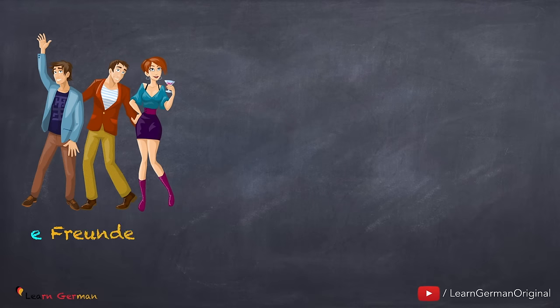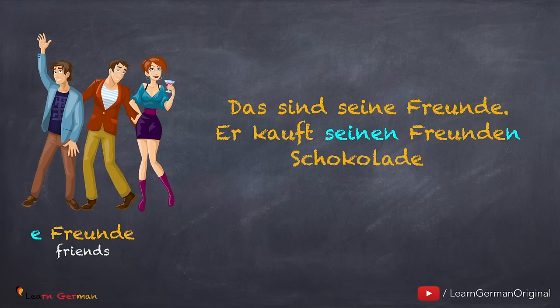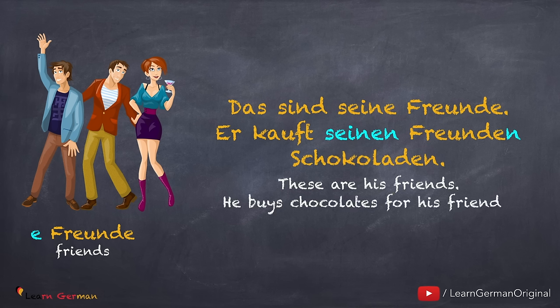Moving on to the plural form. Das sind seine Freunde. Er kauft seinen Freunden Schokolade. In dative, 'seine' changes to 'seinen'. And remember that you add an 'n' to the plural form of the noun.